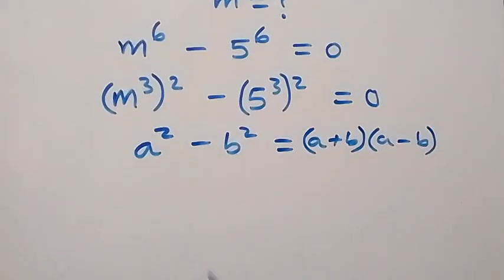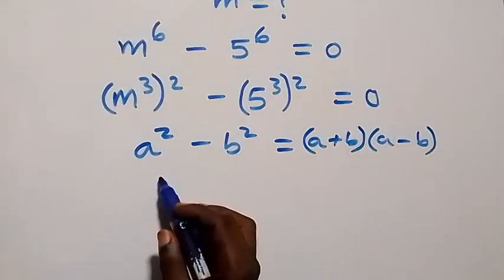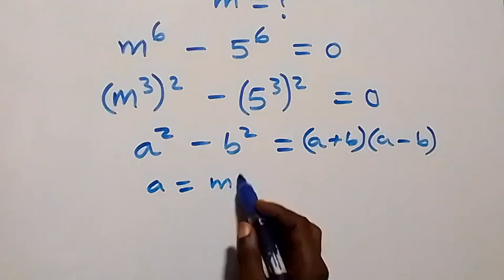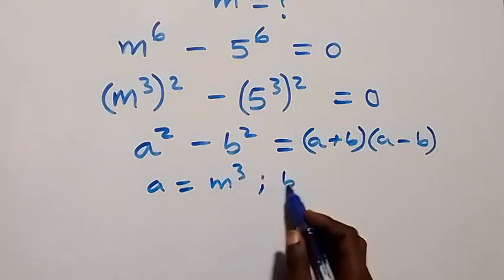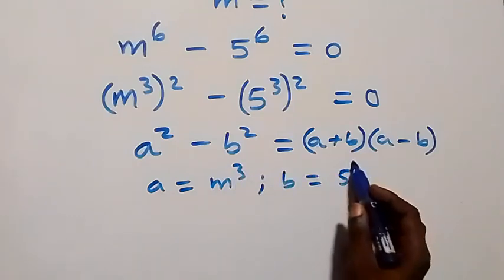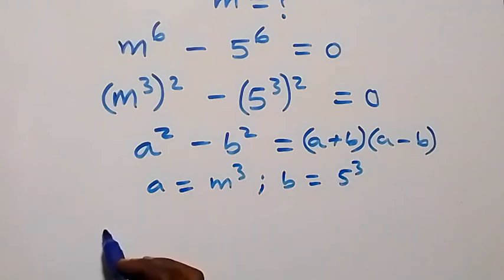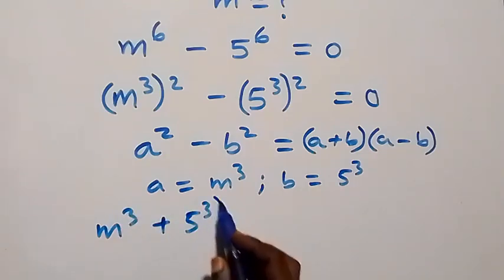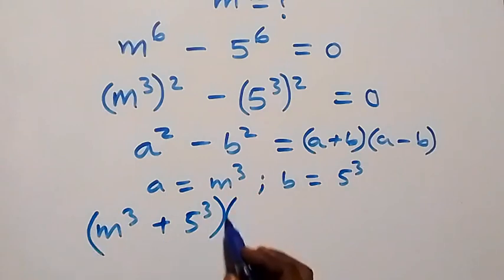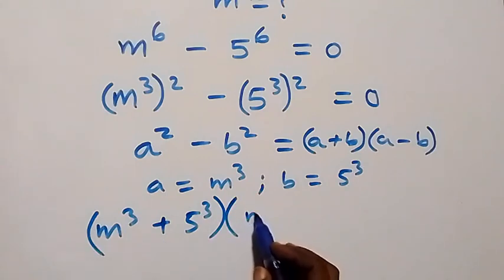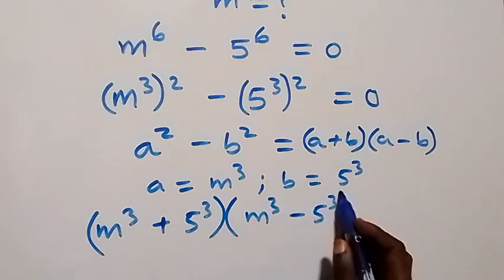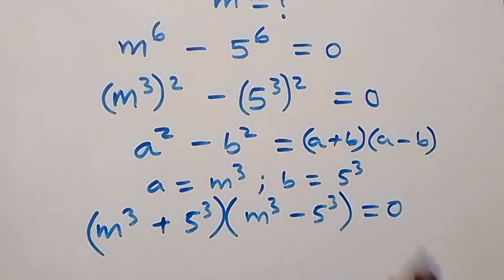Here, a is standing as m cubed and b is standing as 5 cubed. So what we have becomes m cubed plus 5 cubed, into brackets, times m cubed minus 5 cubed, now equals to 0 from here.